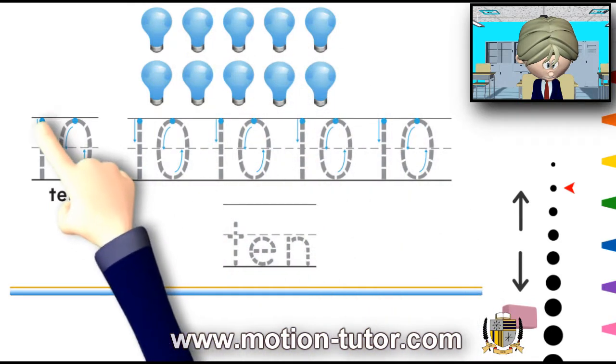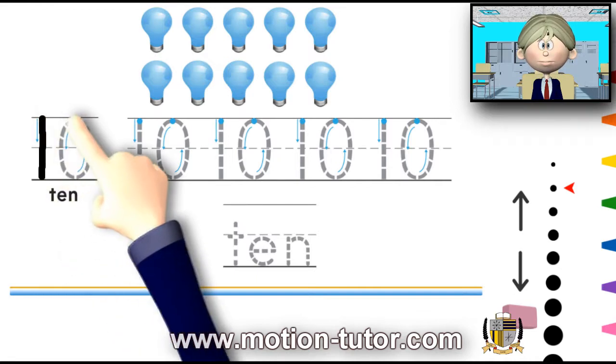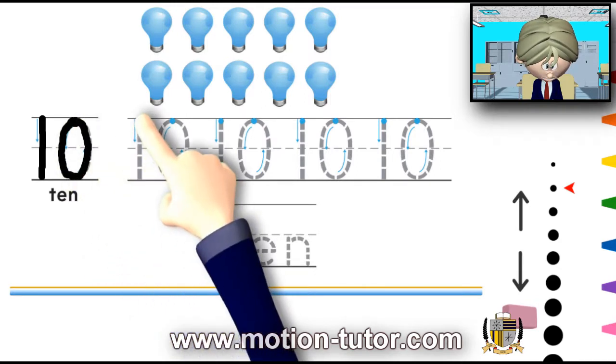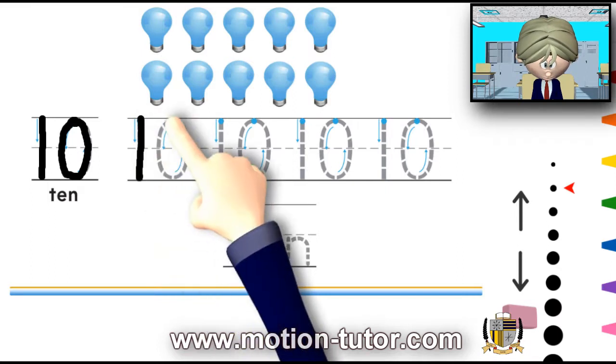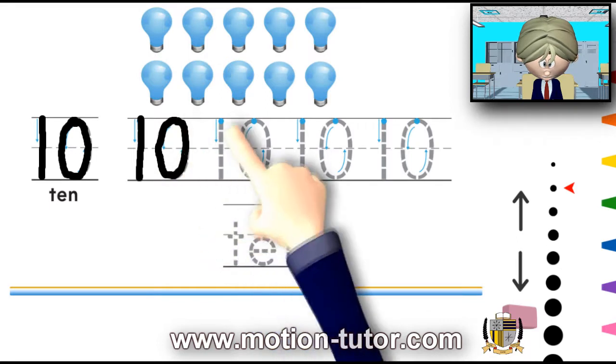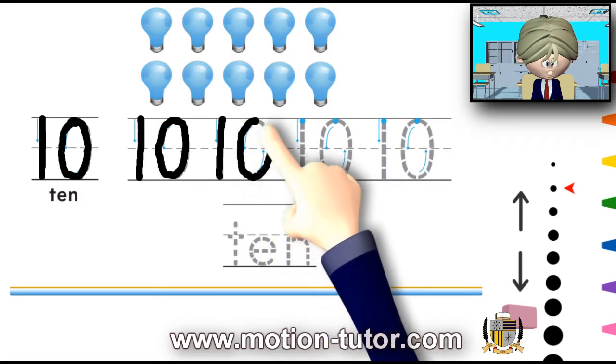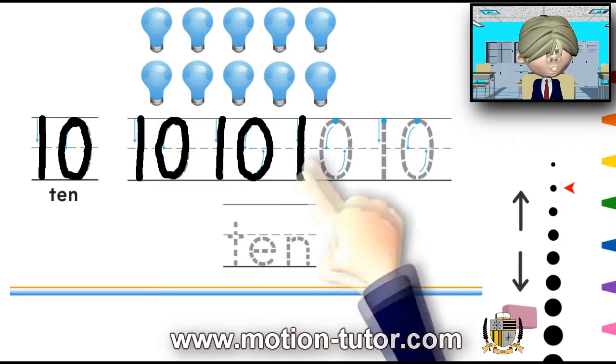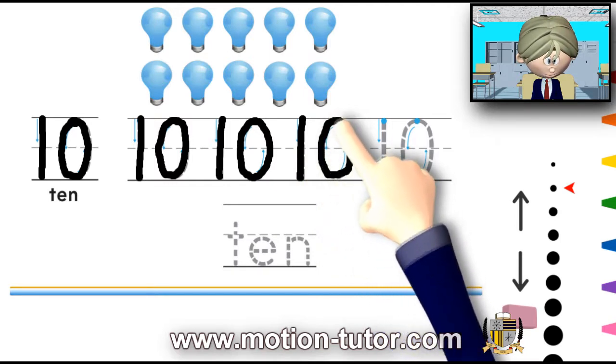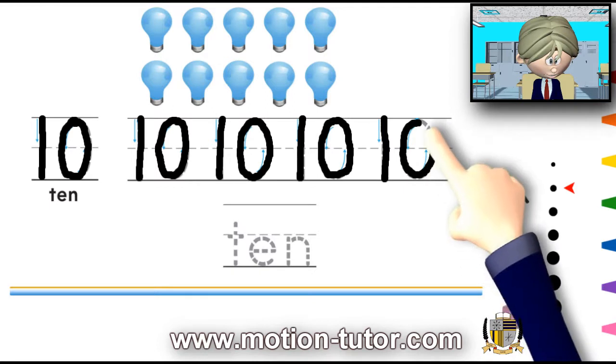And now to write the number 10. It's a 1 and a 0. Let's do it again. A 1 and a 0. This is the number 10. We're practicing 1 and 0. And that's the number 10.